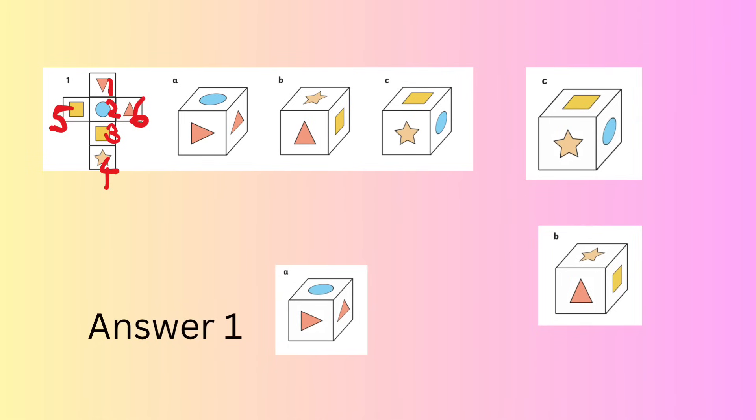Let's check our answers now. Answer 1: Label them as we did before. 1 equals red triangle, 2 equals blue circle, 3 equals yellow square, 4 equals star, 5 equals yellow square left, 6 equals red triangle right.